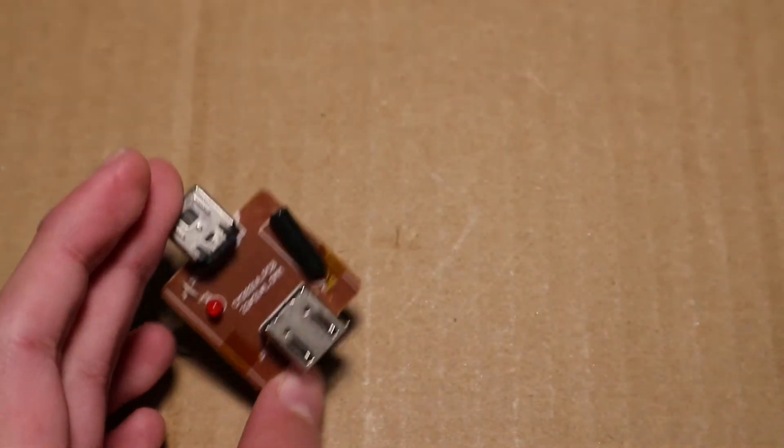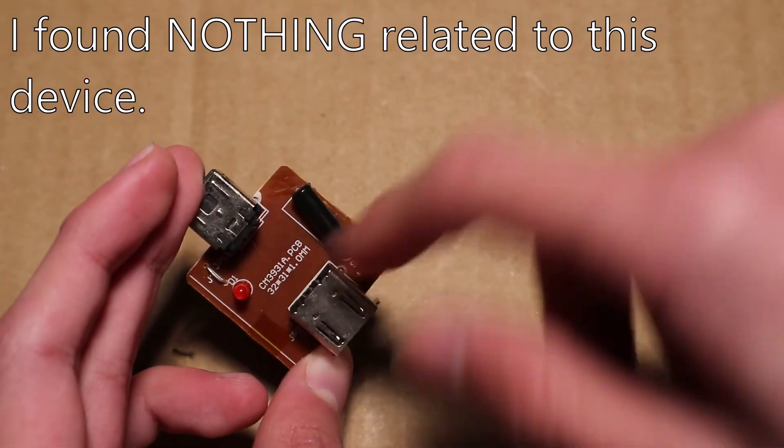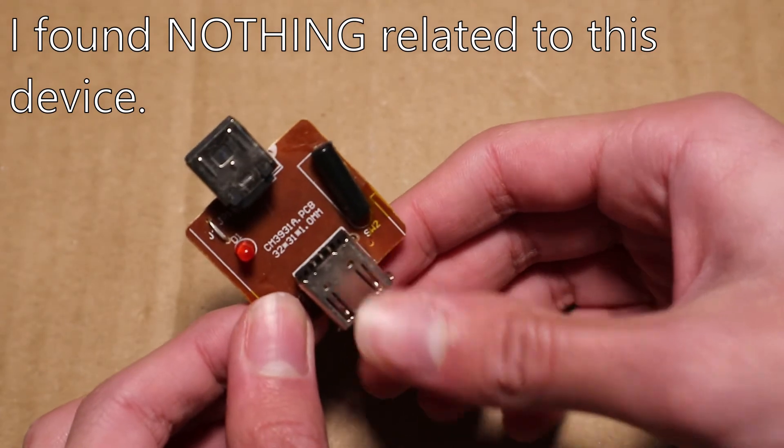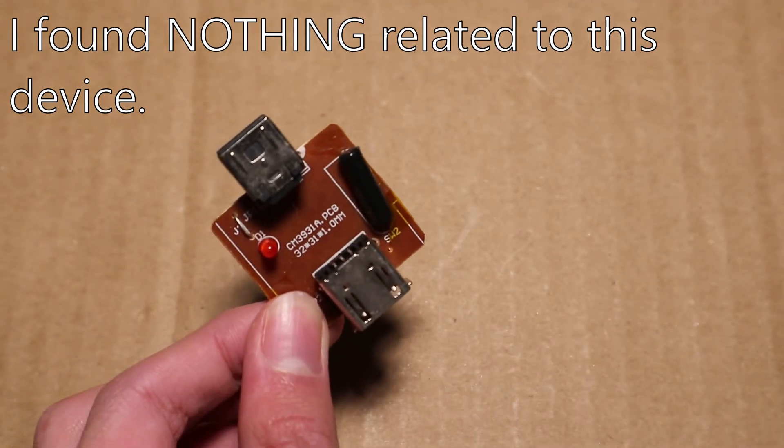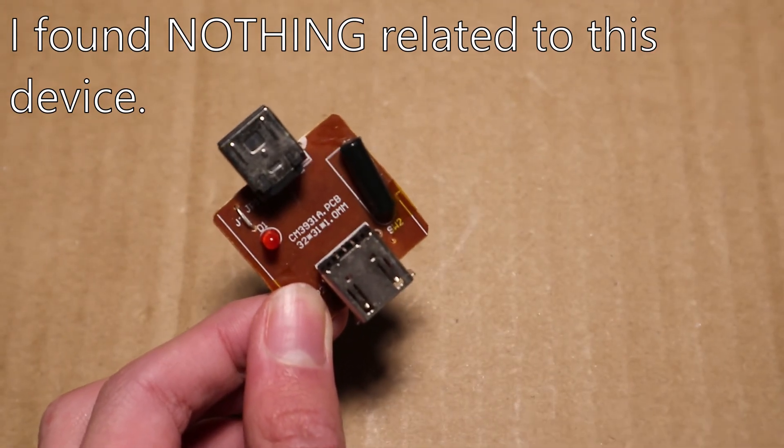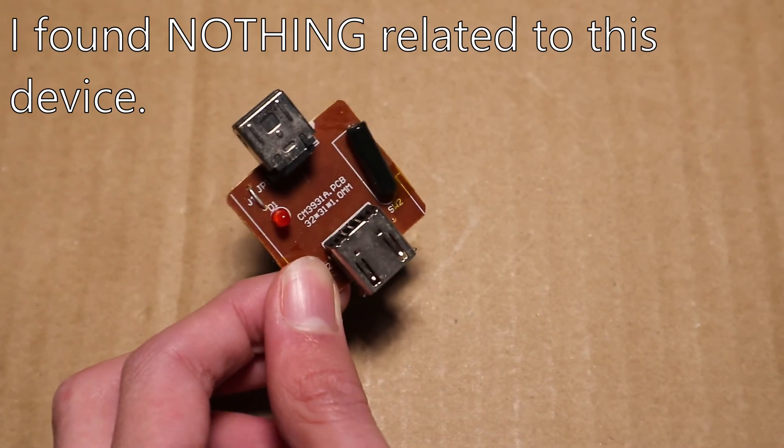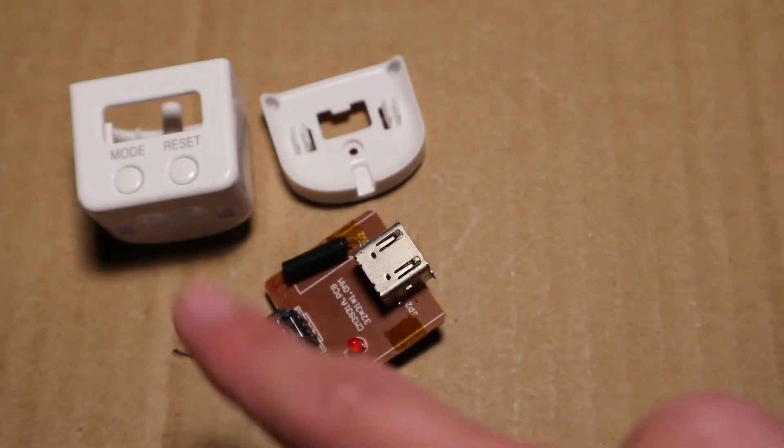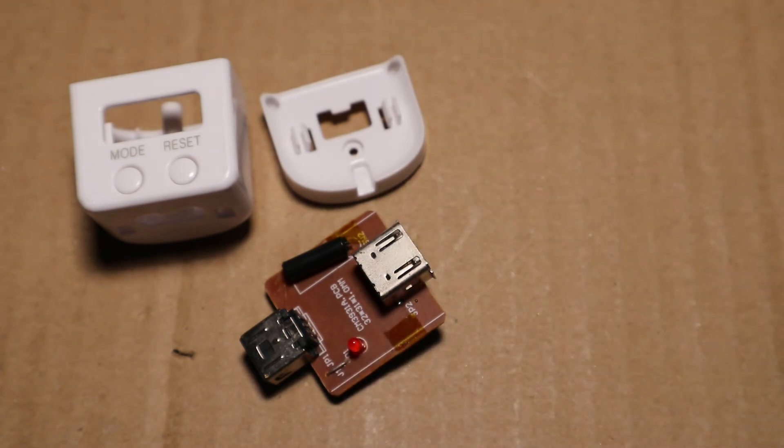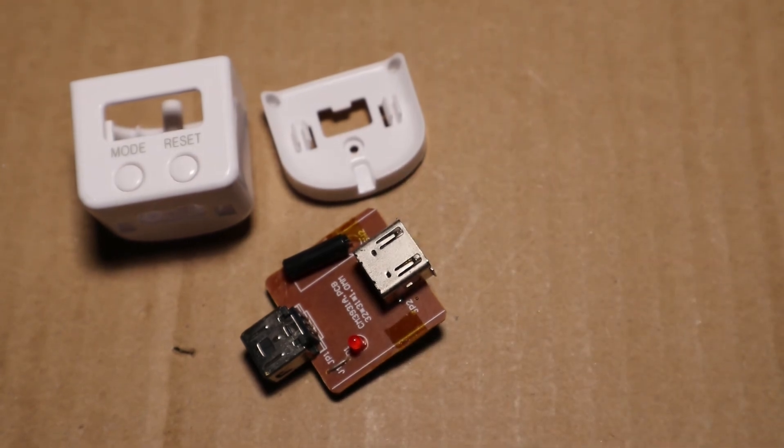So those dimensions were correct. And if I find anything for this CM3931A model number, I will tell you about it on the screen now with some text. But anyways, this is what is inside of this unusual device, and make sure to subscribe for more videos.